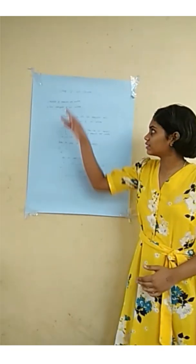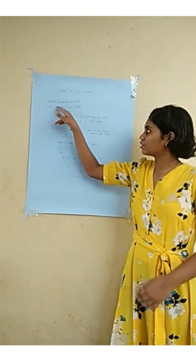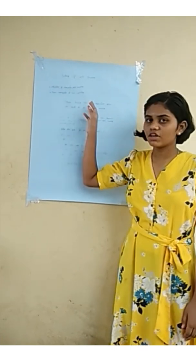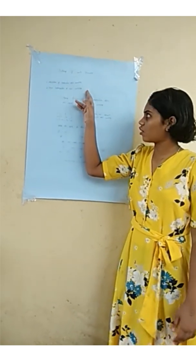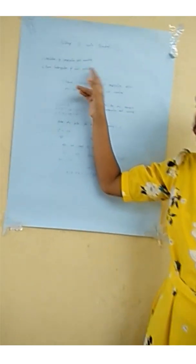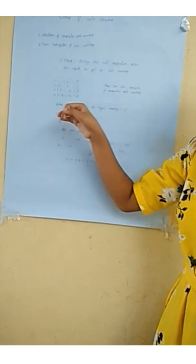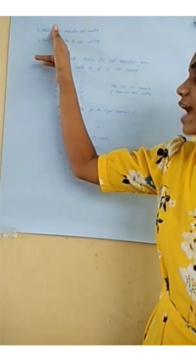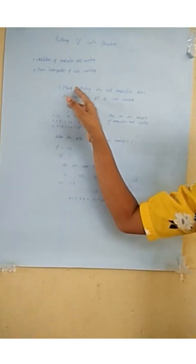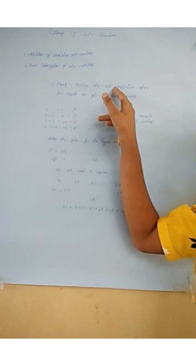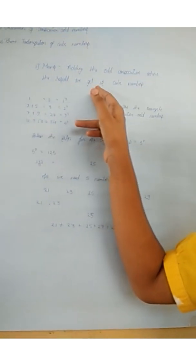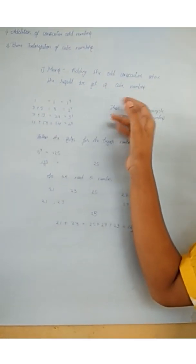The first pattern is addition of consecutive odd numbers — meaning adding consecutive odd numbers where the result we get is a cube number.